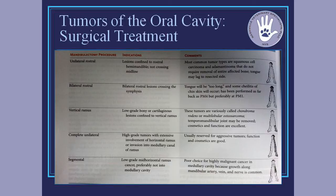The vertical ramus approach is really focused on chondromas or multilobular osteochondrosarcomas — more isolated tumors right at that TMJ joint. Not really done for big malignant tumors. When we see anything involving a fairly large extent of the lateral mandible, the most common approach is going to be a hemimandibulectomy — a unilateral complete hemimandibulectomy. Those are the best for a lot of these aggressive tumors. Even though it's a big surgery, they have a really good outcome, good cosmesis, and dogs do extremely well with it.